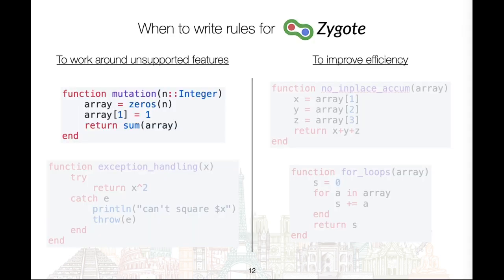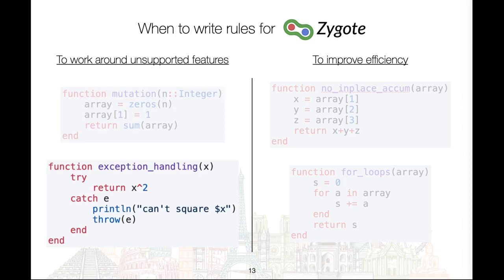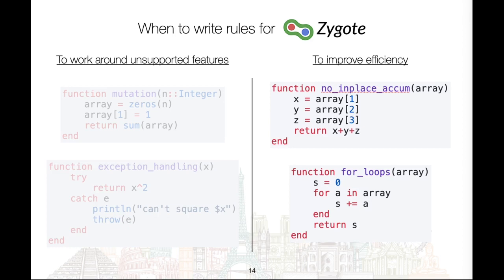Here are a few examples for Zygote. Zygote does not support mutation and cannot differentiate through functions that mutate arrays internally. However, if no arguments are mutated it is possible to write a rule instead. Similarly, Zygote does not support differentiating through try-and-catch statements — again, writing a rule will solve this issue. There are also some language features that Zygote can differentiate through but is quite slow at, such as differentiating through loops and in-place accumulation, though the latter has recently been improved. Both of these would benefit from having rules written.